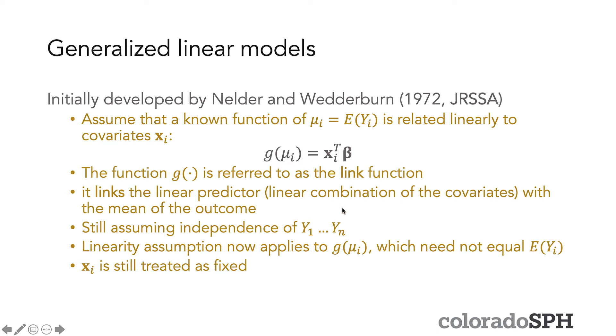One of the things that's the same as pure linear regression is that you still assume independence of Y_1 through Y_n. And you do have a linearity assumption as well, but instead of linearity applying to the Y's themselves, they now apply to g(mu_i), which is not necessarily equal to expectation of Y_i. And then your covariates X_i are treated as fixed just as they were in linear regression.